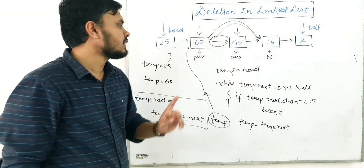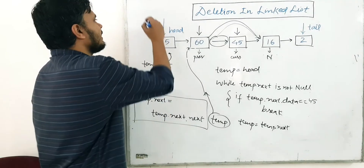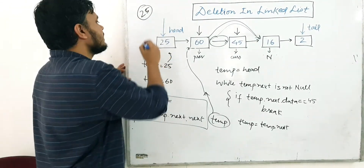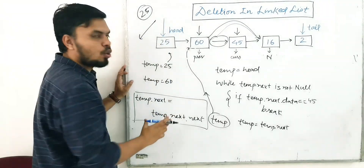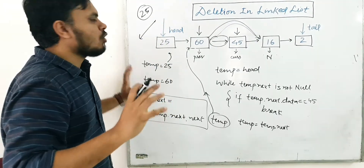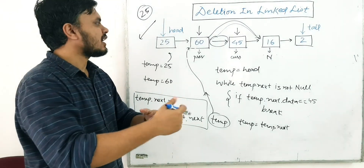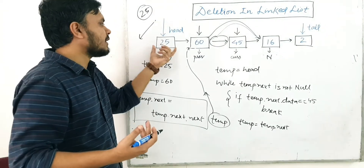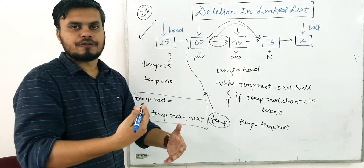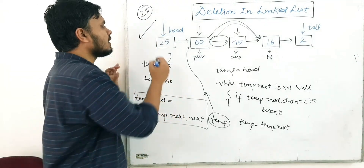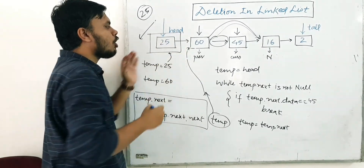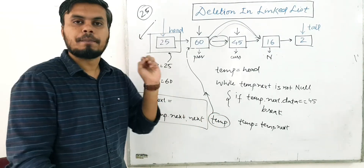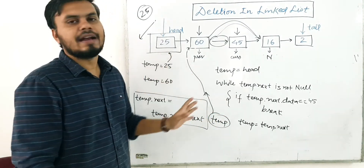There's one caveat. What if you're trying to delete 25, which is the head? In that case you cannot fetch the previous node and this code won't work. So you write a separate special case: check if the item to be deleted is the head, and handle it separately. You already know how to delete the head. Now let's jump into the coding part.